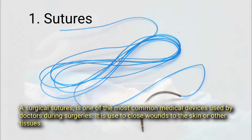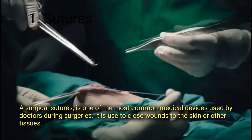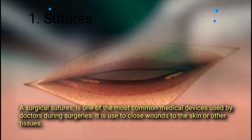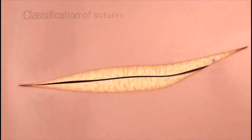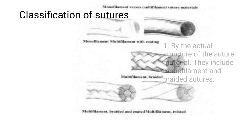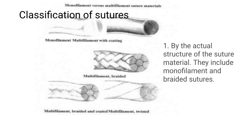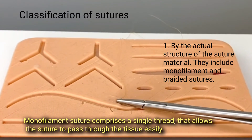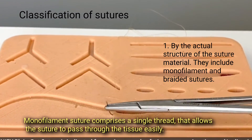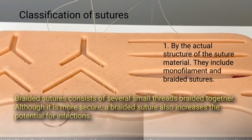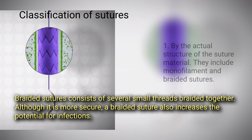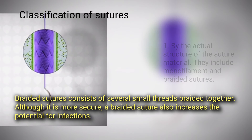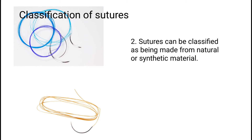A surgical suture is one of the most common medical devices used by doctors during surgeries. It is used to close wounds to the skin or other tissues. Sutures can be classified in many ways: firstly by structure — monofilament sutures comprise a single thread that passes through tissue easily, while braided sutures consist of several small threads braided together and are more secure but increase the potential for infection. Secondly, sutures can be classified as being made from natural or synthetic material.